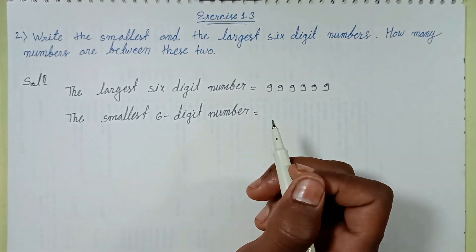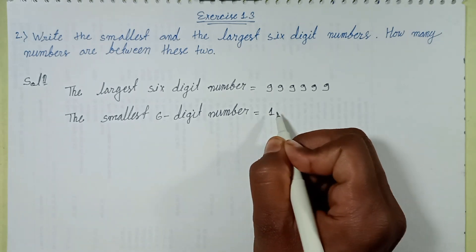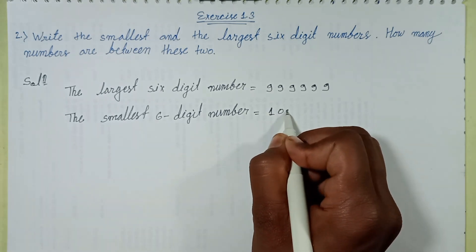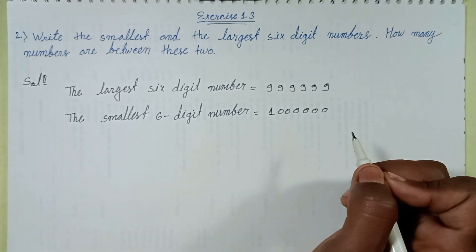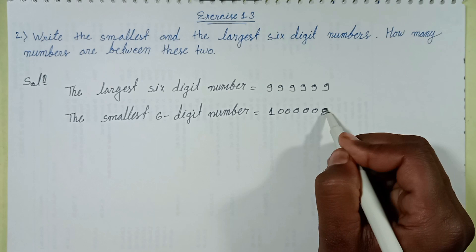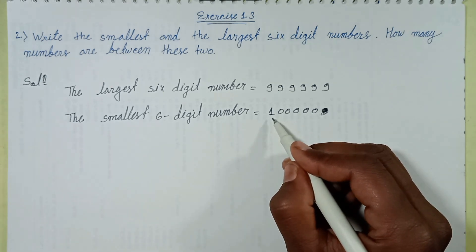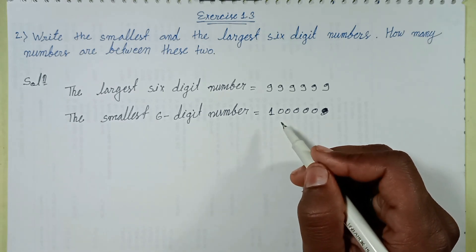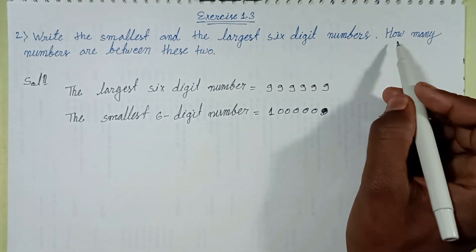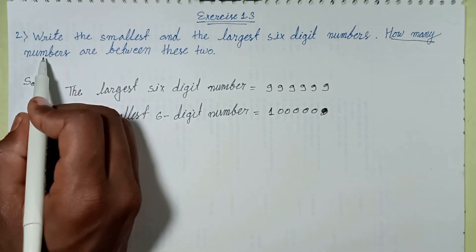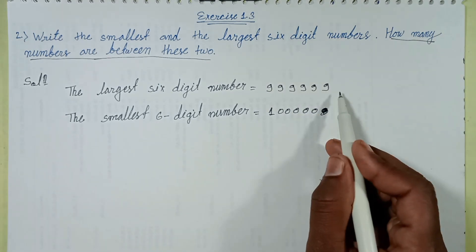The smallest six-digit number is 1 with five zeros — one, two, three, four, five, six digits — so it is 100000. That is one followed by five zeros.